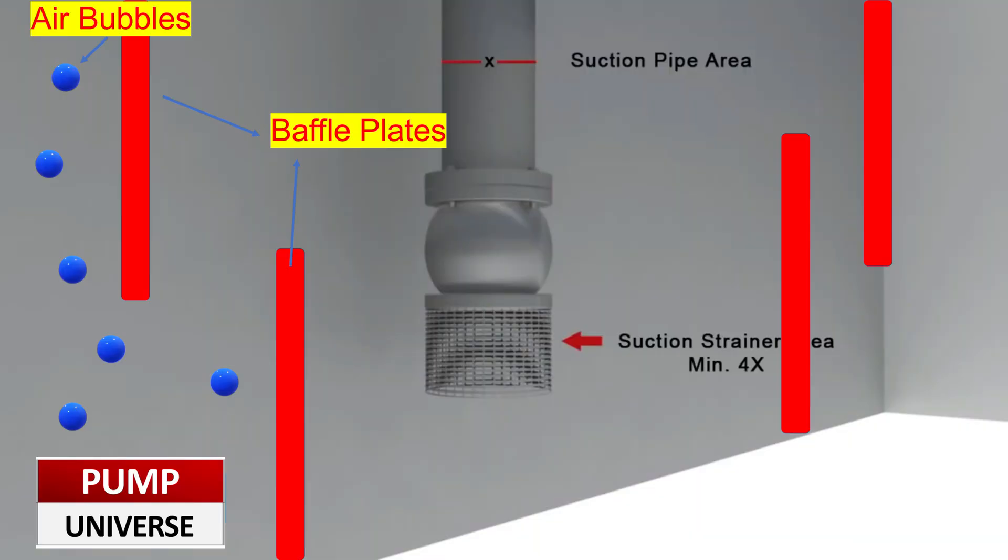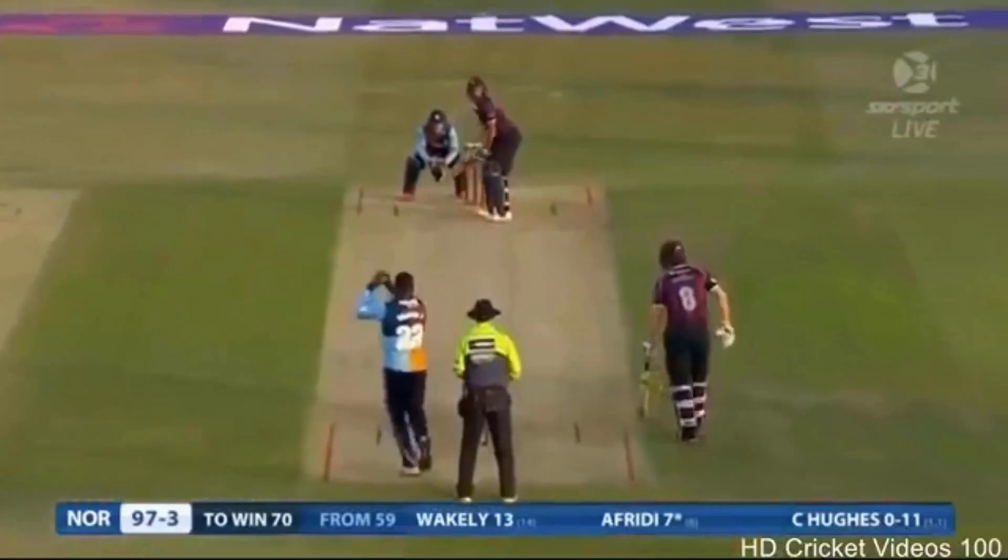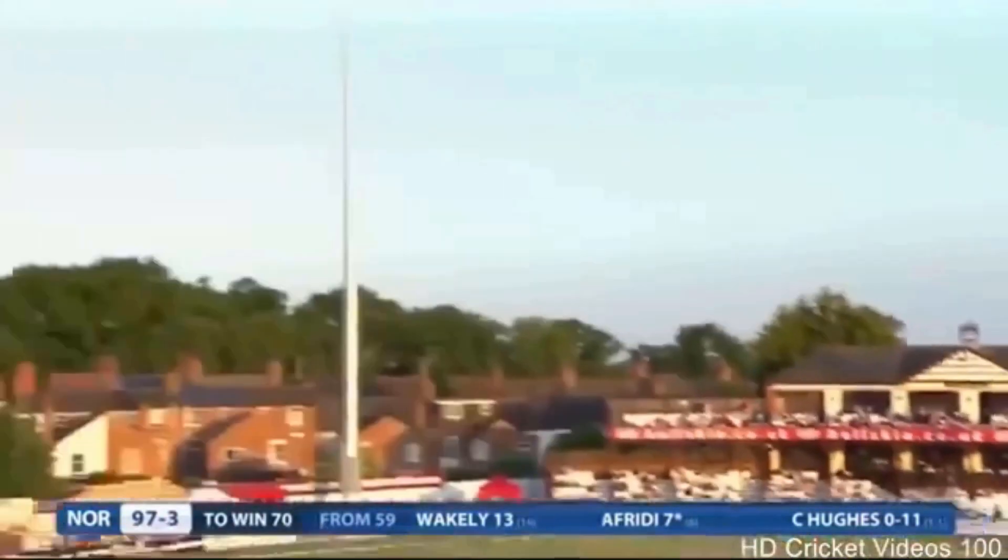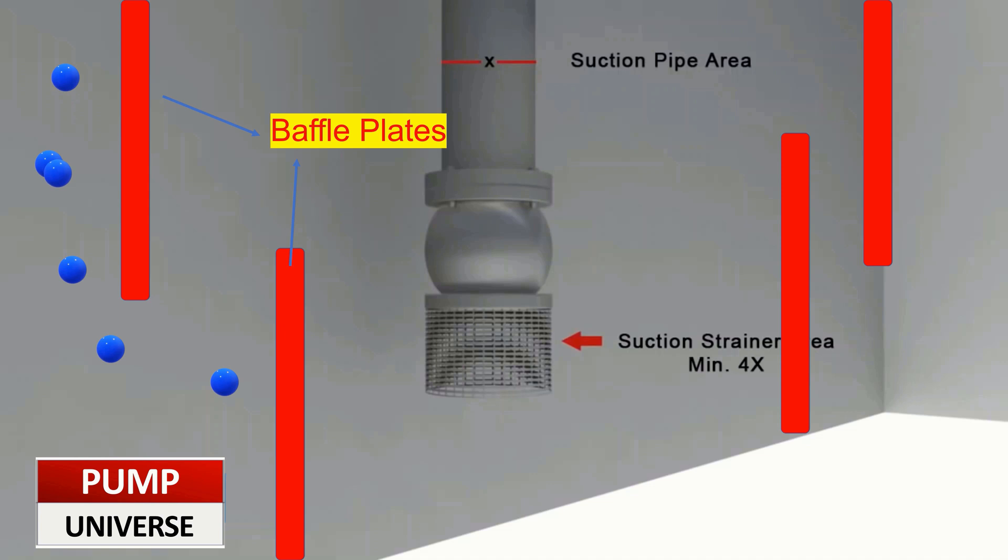Baffle plates. Baffle plates are just like a tennis racket or cricket bat that defends or diverts the direction of ball-like air bubbles, to avoid air bubbles migrating to the inlet and hence avoids air entrainment.